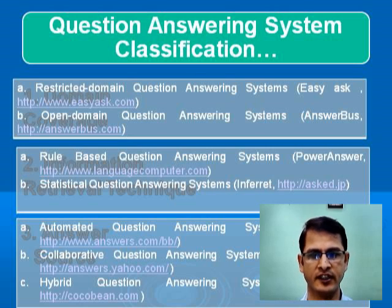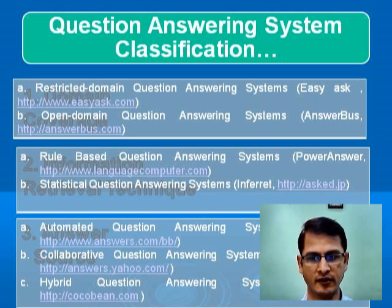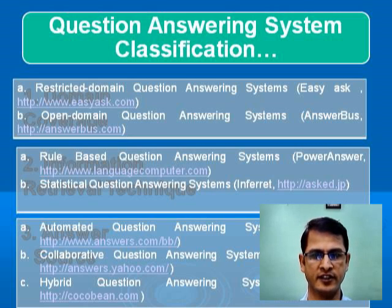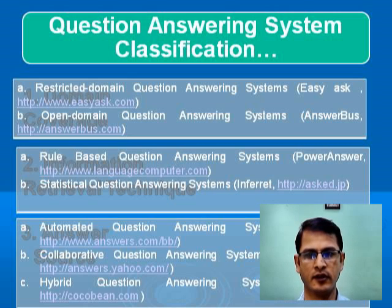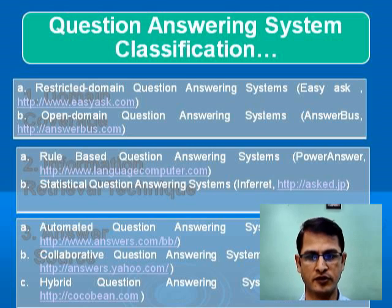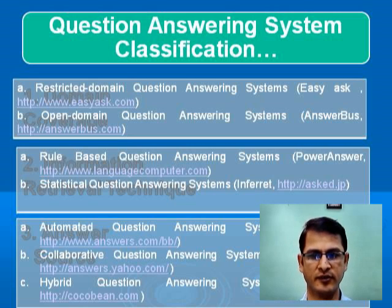The second criteria for classification of question answering systems is information retrieval technique. According to that, there are two types: rule-based question answering systems and statistical question answering systems. The third criteria is answer source — from where they are gathering the answers. According to that, there are three types: automated question answering systems, collaborative question answering systems, and hybrid question answering systems.